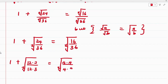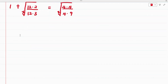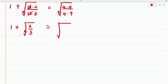From here, the 12 cancels out, giving us 2 over 3, and the 4 cancels out, giving us 4 over 9. So we have 1 plus the x-root of 2/3 equals the x-root of 4/9.